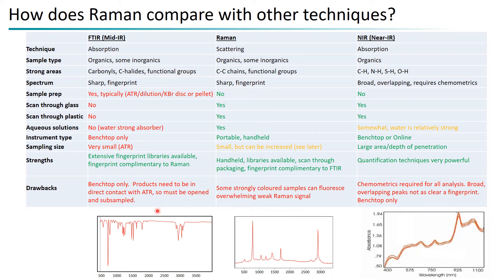The drawbacks of each technique: FTIR is almost exclusively benchtop-based, so products must be brought to the instrument, requiring direct contact with the sample — subsampling is always required, along with sample preparation such as preparing disks.